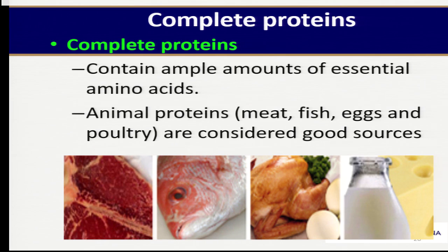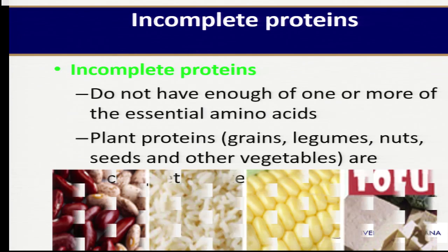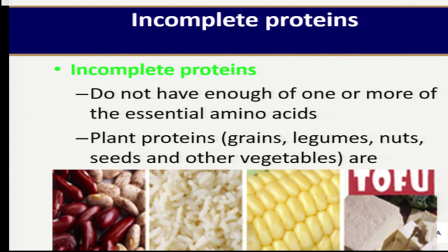Complete proteins are from the animal source foods — that is our fish, our meat and meat products. Milk also contains complete protein because milk is from animal source. And then the incomplete ones are from the plant source foods — that is the legumes, the beans, the rice, the maize and so forth, because maize lacks tryptophan.